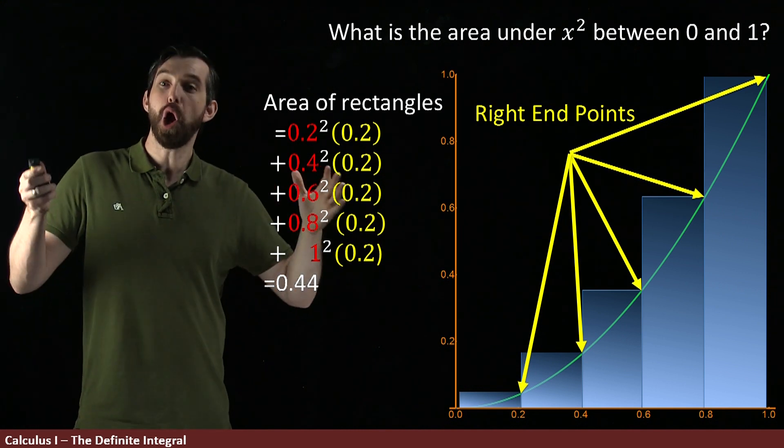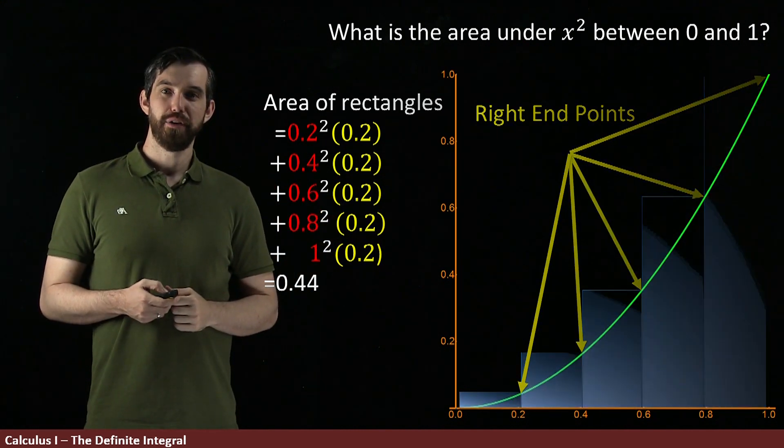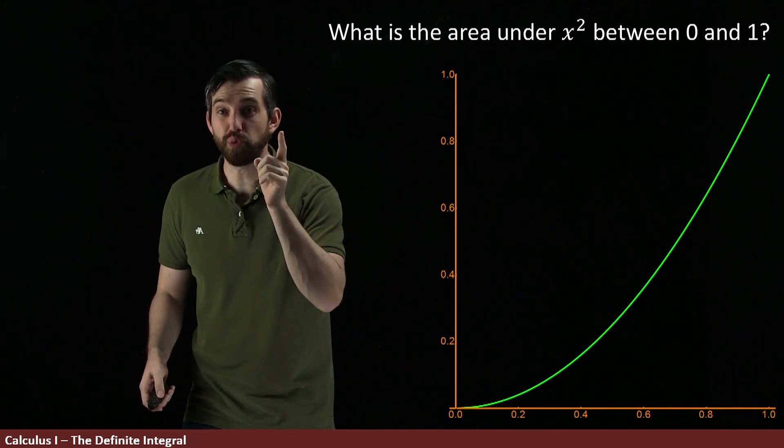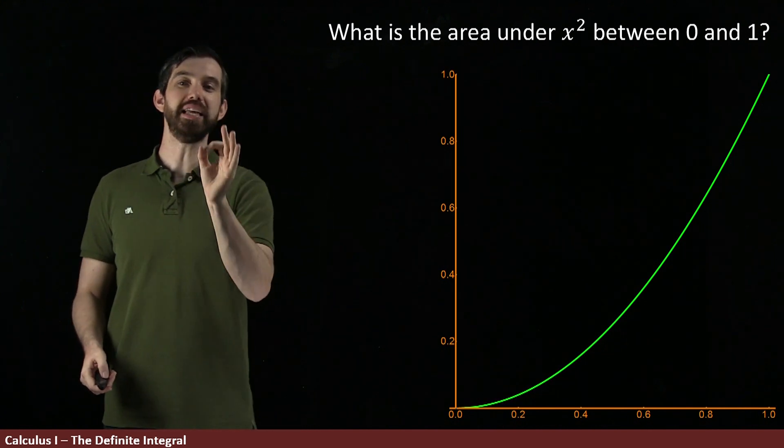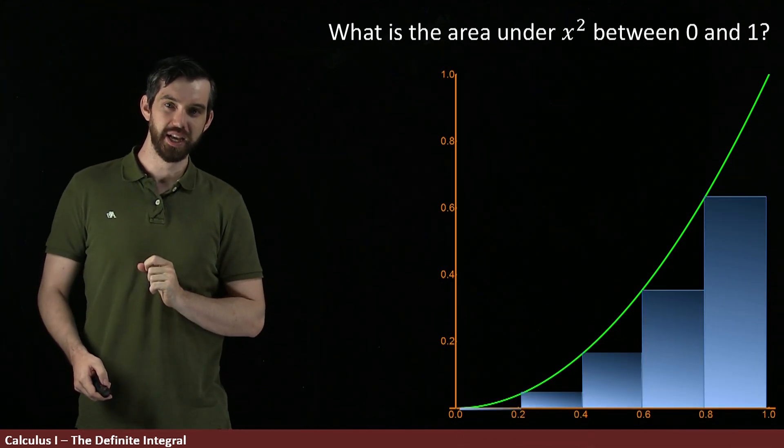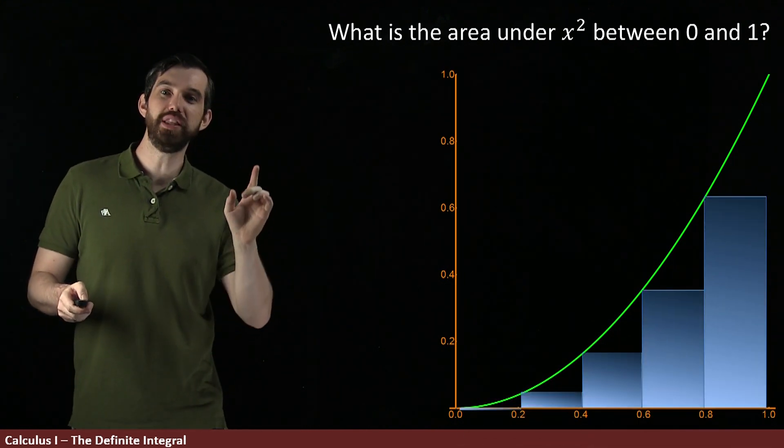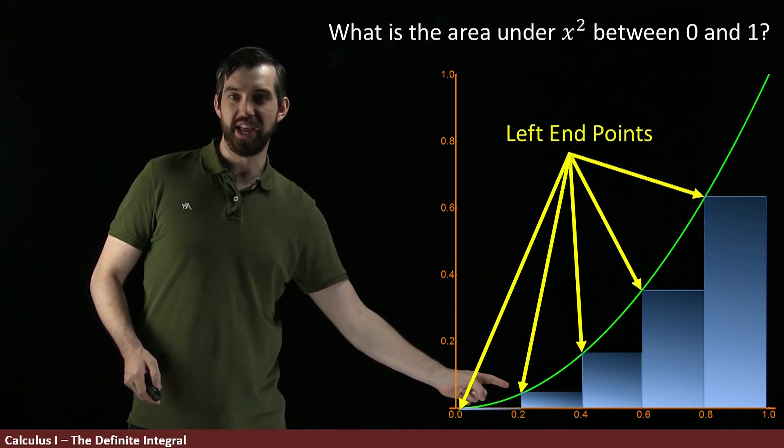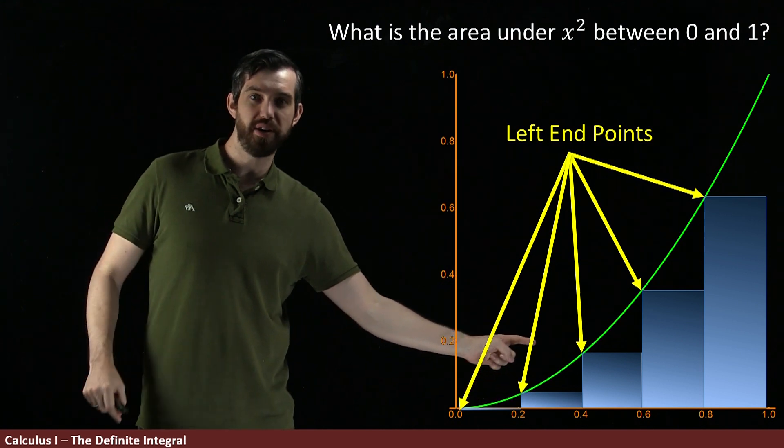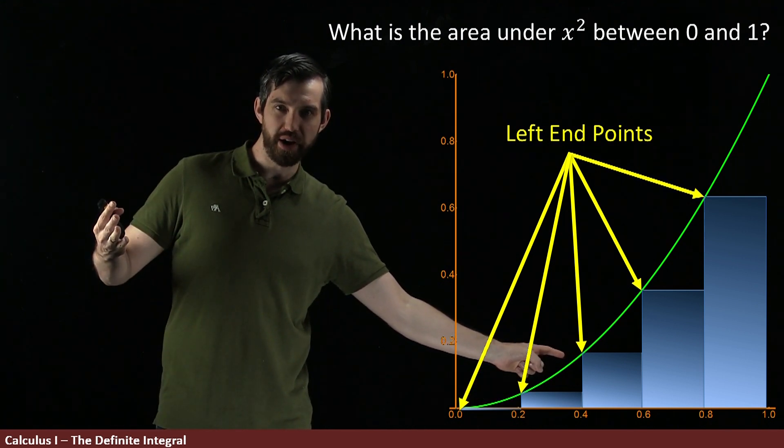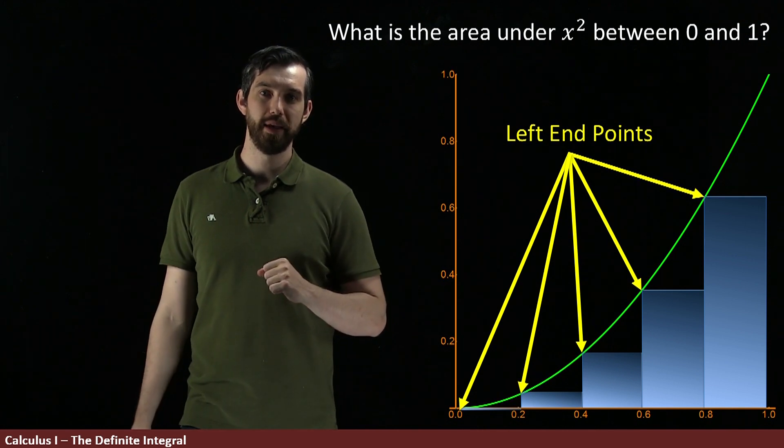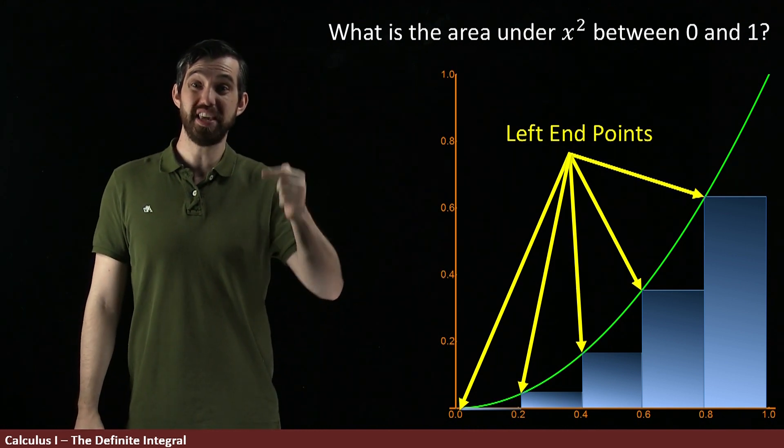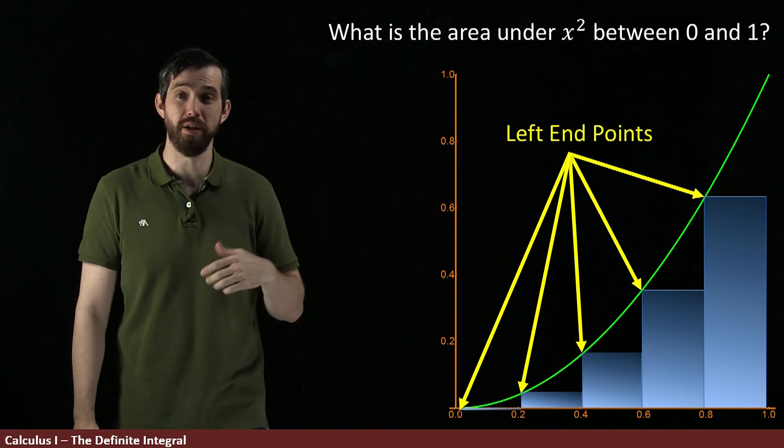Now this is not the only way that I can do this. For instance, if I have this curve and I want to measure the area under it, what if instead of using right endpoints I use some slightly different rectangles? In this case, the rectangles I'm using, the left endpoints. So this is the rectangle of height zero, the rectangle of height 0.2 squared, of 0.4 squared, 0.6 squared, and so on. So again, five different rectangles.